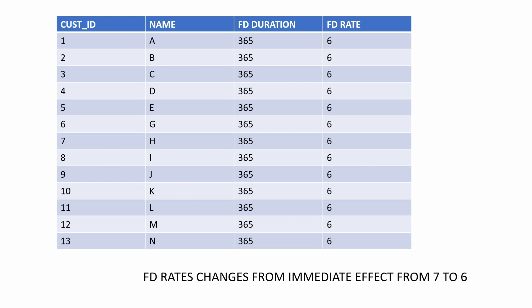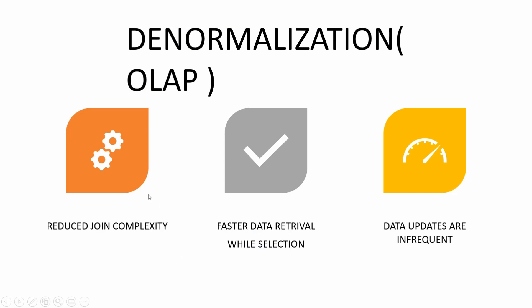Let's quickly see what denormalization is. As the name suggests, it is the opposite of normalization. It is a process of merging two or more related data sets which introduces redundancy but at the same time decreases join complexity and increases select performance, which is vital for OLAP and reporting systems. Denormalization is widely used in systems where updates are not frequent and the focus is on aggregation of data for analysis instead of selective querying.